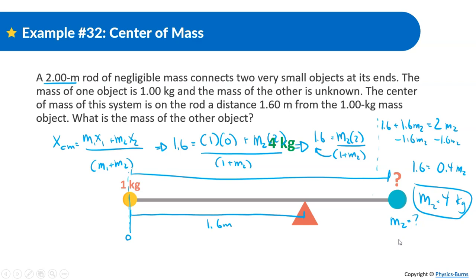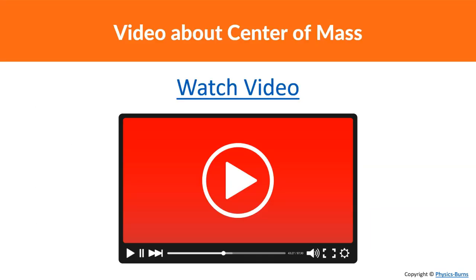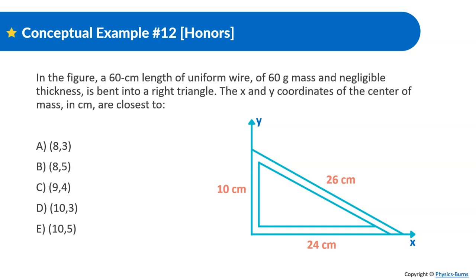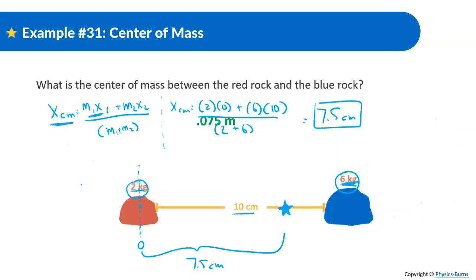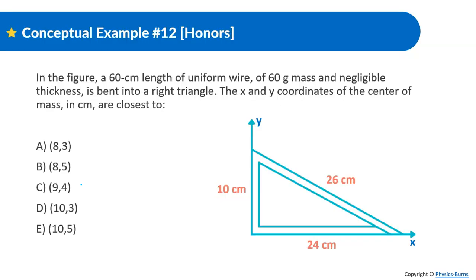Now it gets a bit trickier because we have two directions. Before we only had the x (horizontal) direction, but now we have both x and y. In this problem, a 60-centimeter-long uniform wire of 60-gram mass is bent into a right triangle. We need to find the x and y coordinates of the center of mass in centimeters.